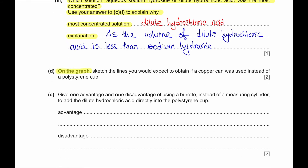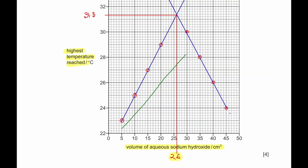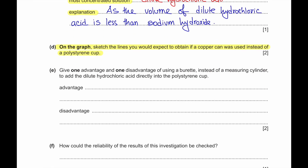Part D: on the graph, sketch the lines you would expect if a copper can was used instead of a polystyrene cup. A copper can would lose heat to the surroundings much faster, so the maximum temperature would be reached at the same volume, but it would be a lower temperature. Part E: give one advantage and one disadvantage of using a burette instead of a measuring cylinder. A burette is more accurate; a disadvantage is that it is very slow to add.